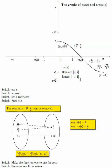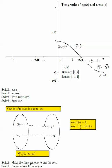So domain is restricted to 0 to pi. Range is still from negative 1 to positive 1 — the smallest is negative 1, the biggest is 1. After removing the pair with negative 2 pi over 6, the function becomes 1-to-1.